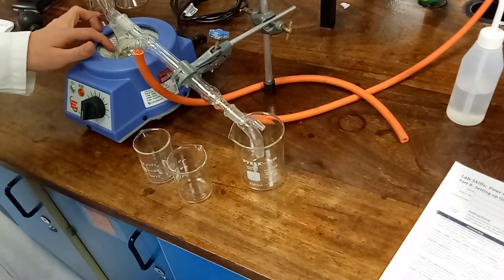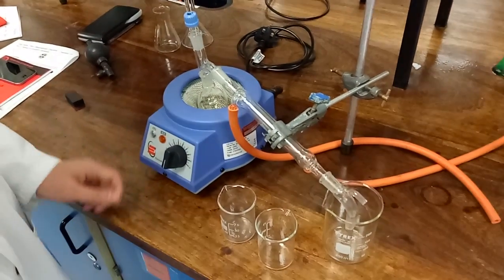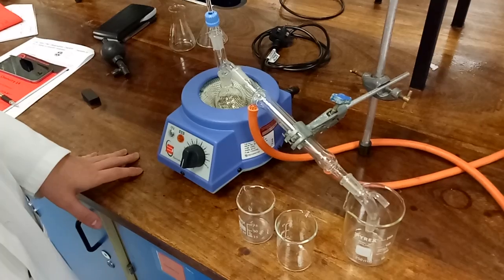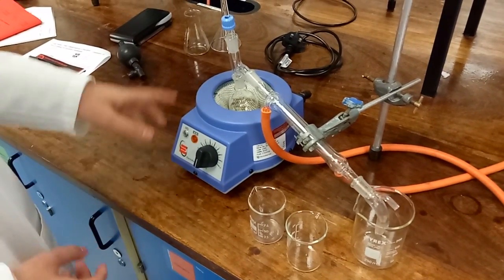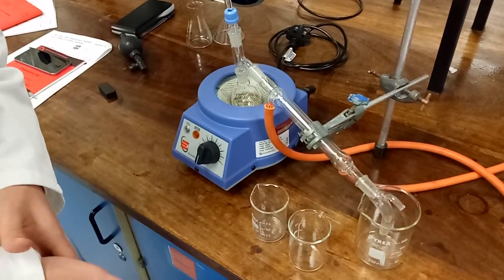Before it distills to nothing, we turn off the heating mantle, because if there's no liquid left in the flask, you're in danger of an explosion.